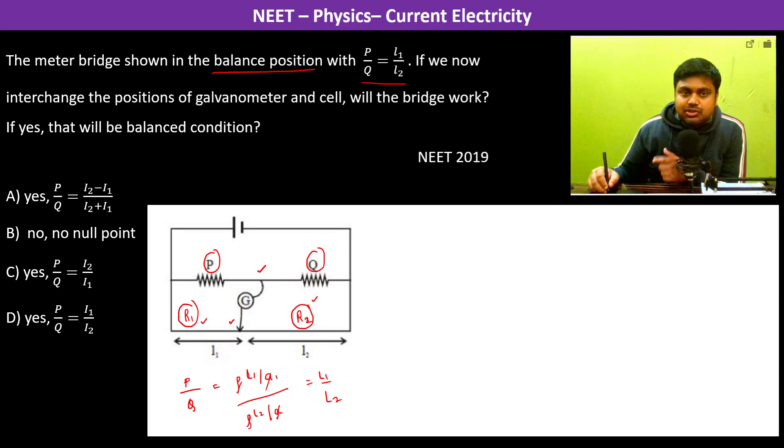Now, what has happened is we have interchanged the position of galvanometer and cell. So let us draw the circuit. Here now it becomes galvanometer, this is P, this is Q and this is now the cell.